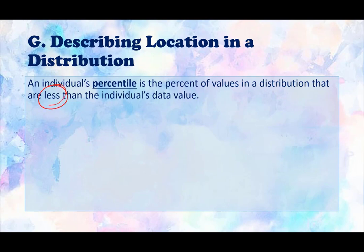An individual's percentile is the percent of values in a distribution that are less than the individual's data value. It's very important when finding the percentile to remember that it's less than. Also, we need to be careful with our language when describing percentiles. Percentiles are specific locations in a distribution. An observation isn't in the 84th percentile, rather it's at the 84th percentile. Just be careful when describing your percentiles.